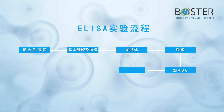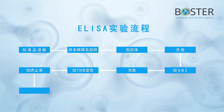It can be roughly divided into nine steps: dissolve the standard, dilute and add sample, add antibody, wash plate, add avidin biotin complex, wash plate, add TMB and develop color, add stop solution, and analyze data.